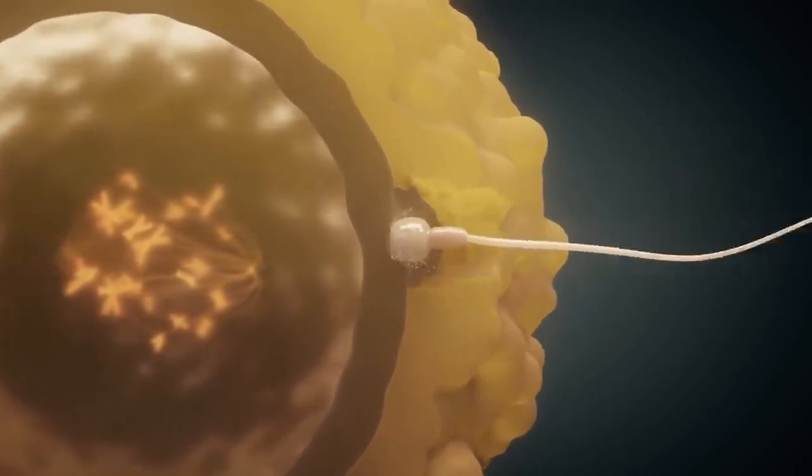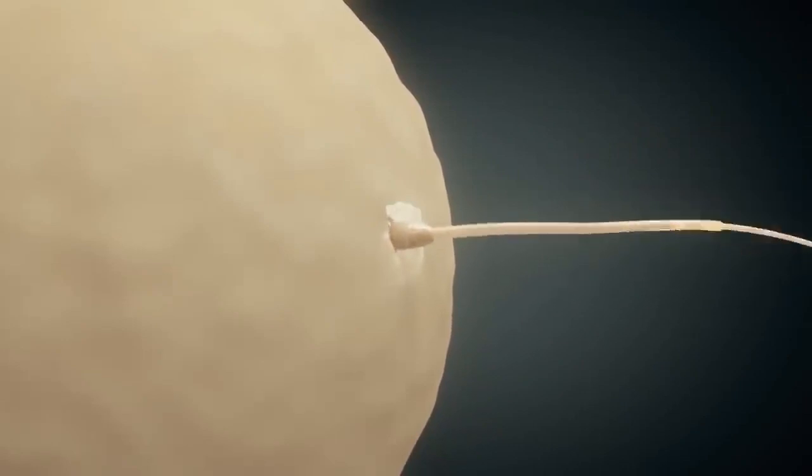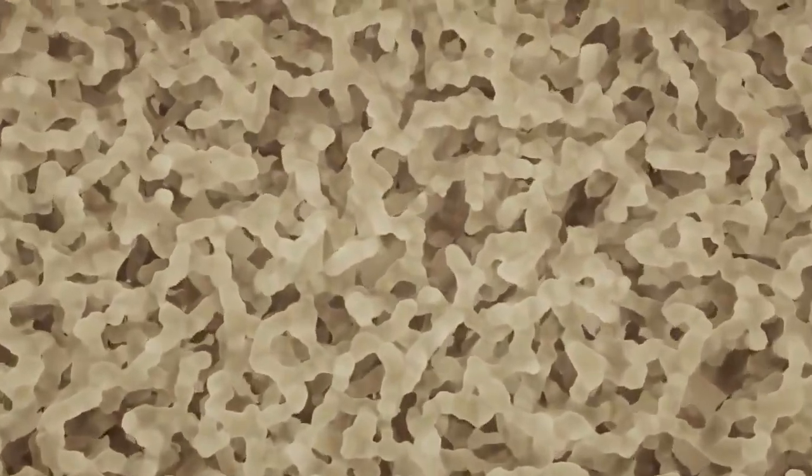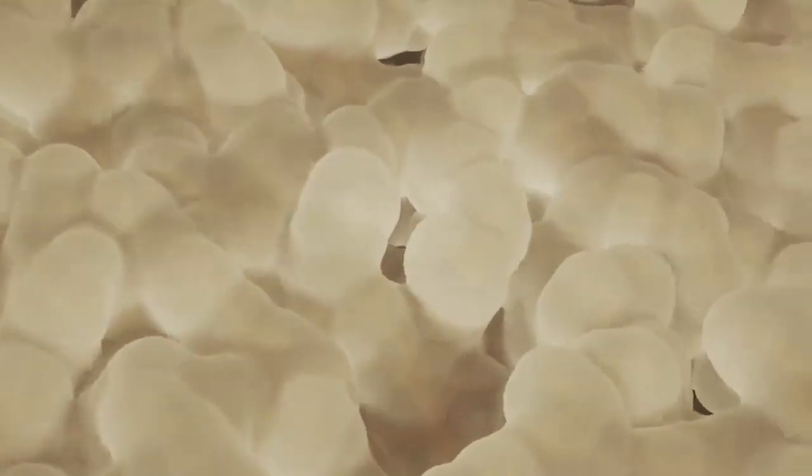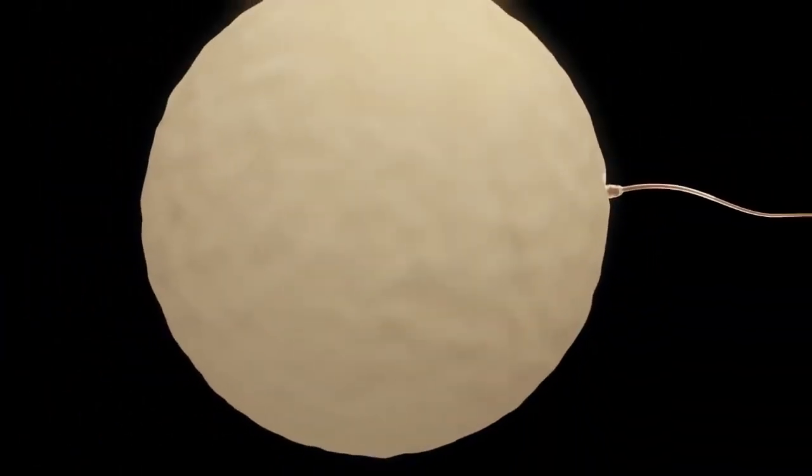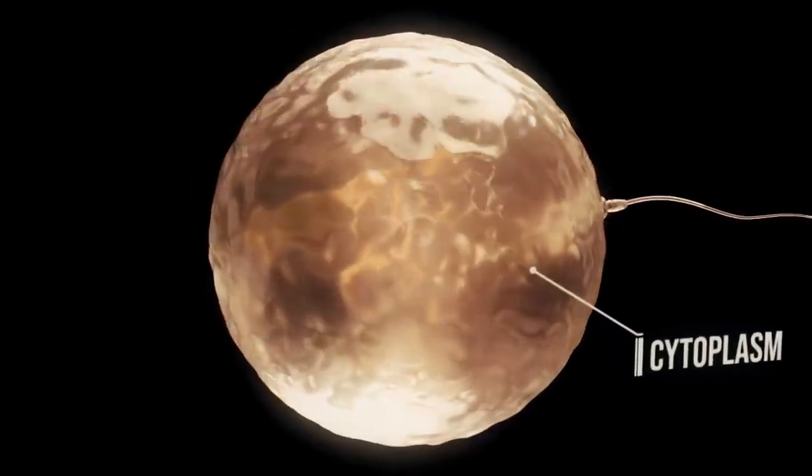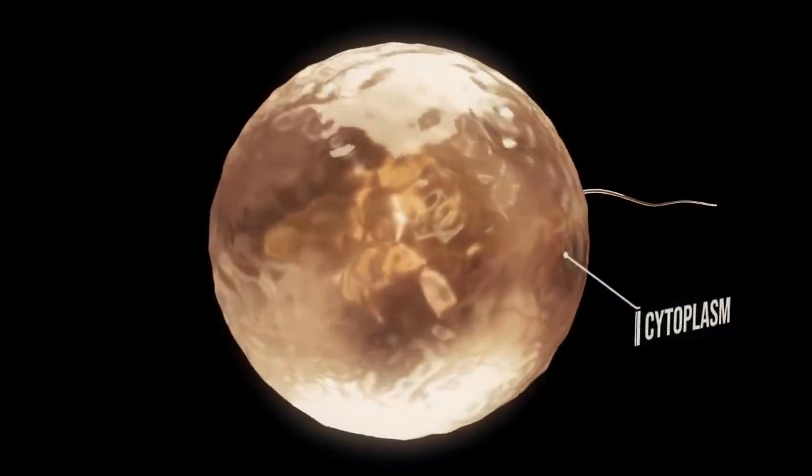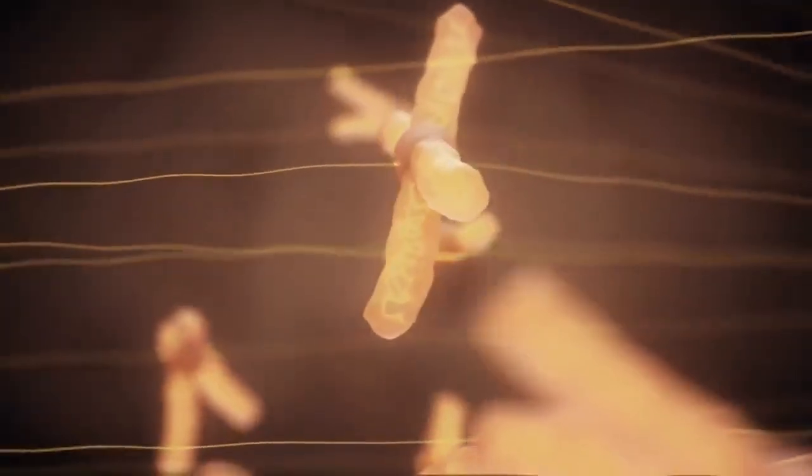The sperm cell penetrates corona radiata and zona pellucida resulting in the degradation of the acrosome cap. Upon entering the cytoplasm, fertilization occurs resulting in activation. Activation causes a structural change of the zona pellucida so that no further sperm can penetrate. In addition, activation causes the ovum to complete its second maturation division in which the sister chromatids are pulled into opposite poles and a female pronucleus and a polar body are formed.